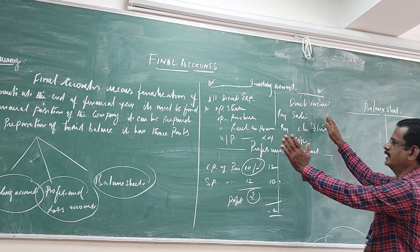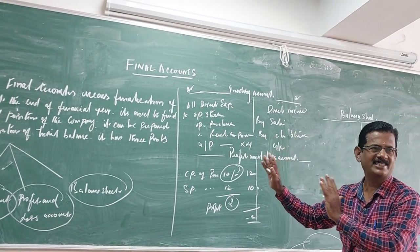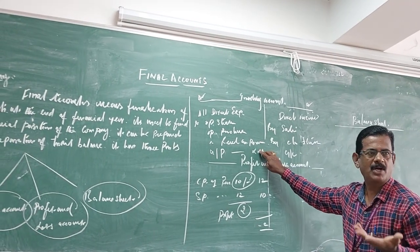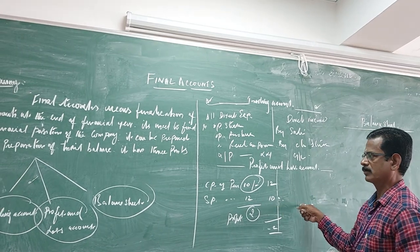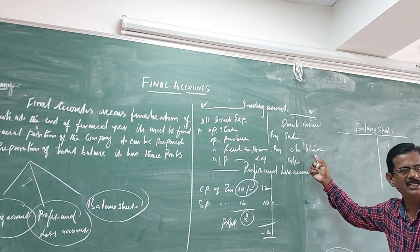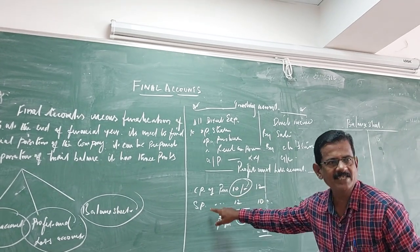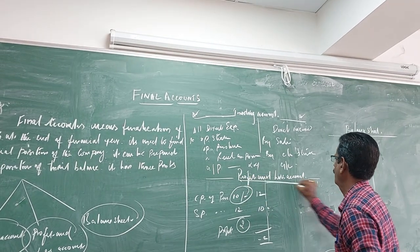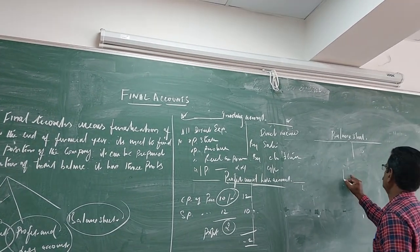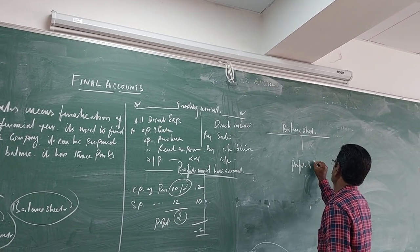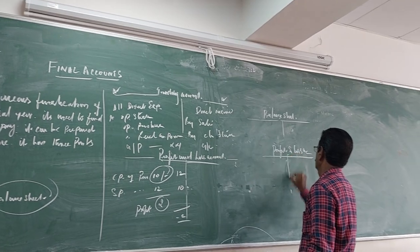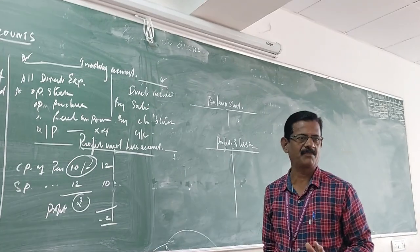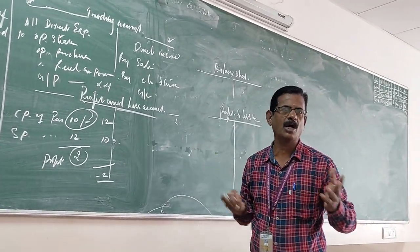To separate the differences between cost price and the selling price is shown in the trading account. If gross loss is there, it will be shown on the debit side of the profit and loss account.